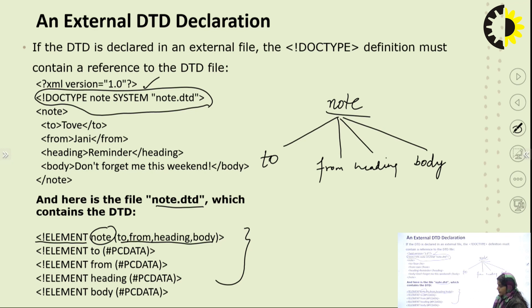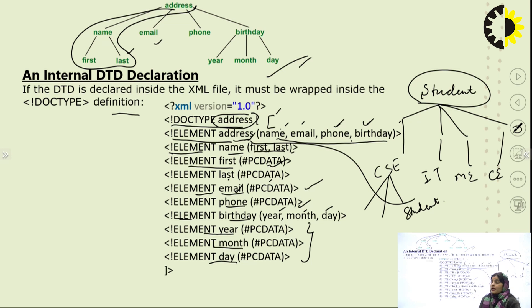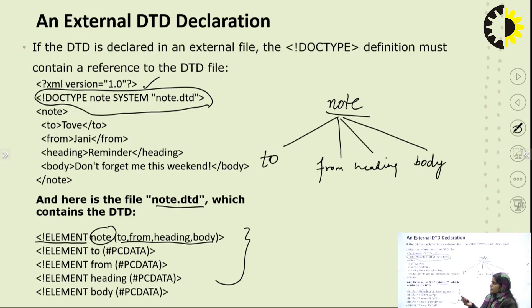In the external DTD, a tree structure is not separately given as in the internal DTD example — instead, the code itself defines the tree. As already stated, DTD declares the XML document in a tree-form structure. So this code is the input, and the resulting tree is the output. This is the tree structure of that particular DTD.